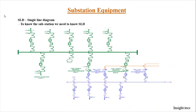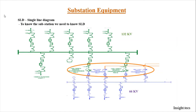To understand any substation, we need to study its single line diagram first. Shown here is a single line diagram of a substation converting 132 kV to 66 kV. The green lines are the incoming 132 kV lines, transformers convert 132 kV to 66 kV, and the blue lines are the outgoing 66 kV lines going to another substation.